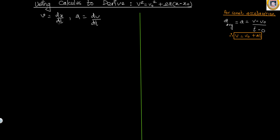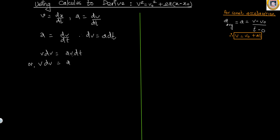Acceleration is the first derivative of v with respect to t. Writing the equation of acceleration: a equals dv over dt, so dv equals a dt. Now multiply both sides by velocity, so v dv equals a times v dt. Since v equals dx over dt, we can substitute v dt with dx, giving us v dv equals a dx.